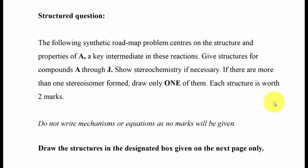Okay, so now we come to the structural question. It says the following synthetic roadmap problem centers on the structure and properties of A, a key intermediate in these reactions. Give structures for compounds A through J, show stereochemistry if necessary. If there are more than one stereoisomer formed, draw only one of them. Each structure is worth two marks.